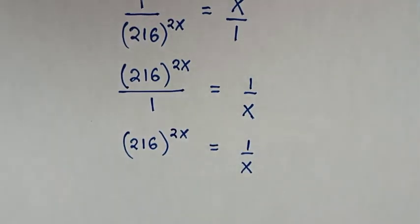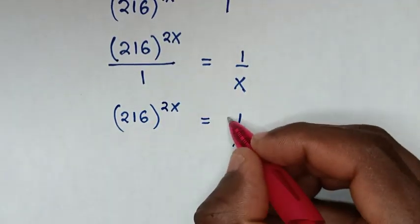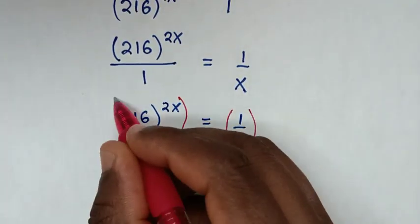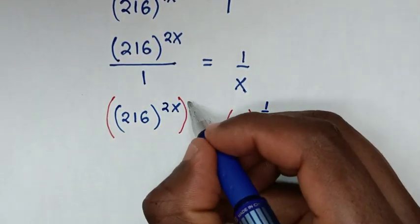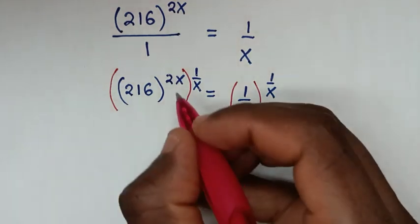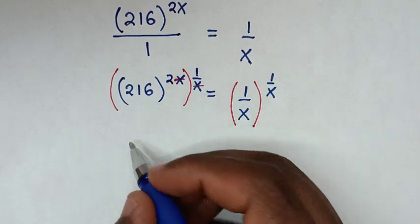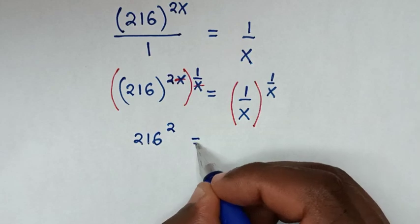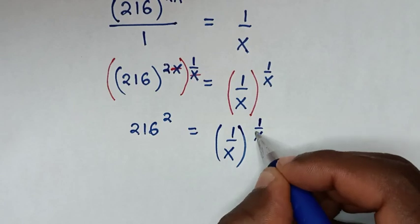In the next step, 216^(2x) = 1/x. Now we make both sides to the same power of 1/x, so we raise both sides to the power of 1/x. Then x cancels x, giving us 216^(2×1) = 216^2, equal to (1/x)^(1/x).